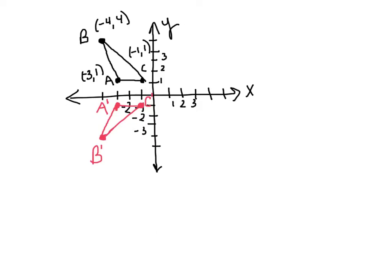Now I'm going to reflect the original shape over the y-axis in green, which means the x-values change. Point A at (−3, 1) becomes A″ at (3, 1). B at (−4, 4) becomes B″ at (4, 4). C at (−1, 1) becomes C″ at (1, 1). In review: reflecting over the x-axis moves your shape up or down; reflecting over the y-axis moves it left to right.